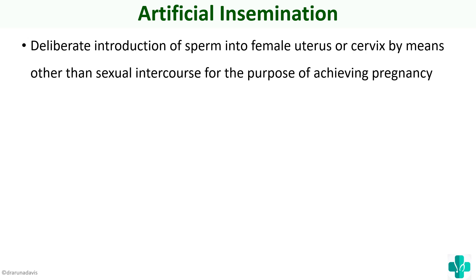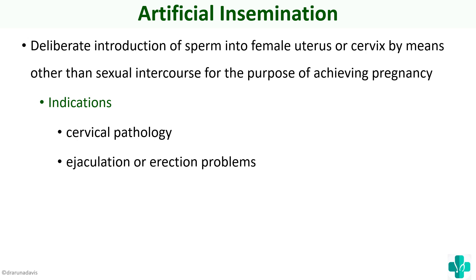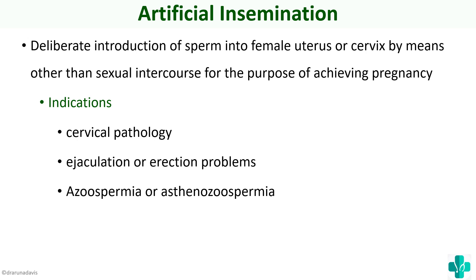Artificial insemination is the deliberate introduction of sperm into the female uterus or cervix by means other than sexual intercourse, for the purpose of achieving pregnancy. The indications include cervical pathology where the cervical mucus is thick and sperm cannot penetrate, ejaculation or erection problems hindering deeper penetration, or azoospermia and asthenospermia where sperm concentration is less — so a more concentrated semen is prepared and introduced into the uterus.